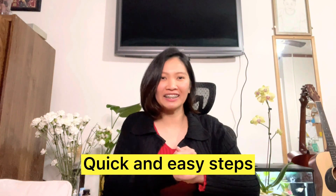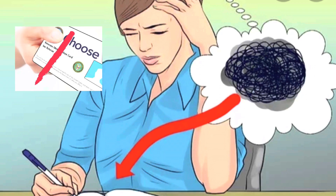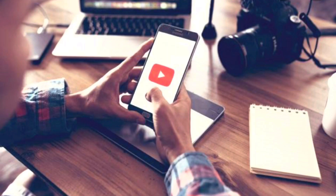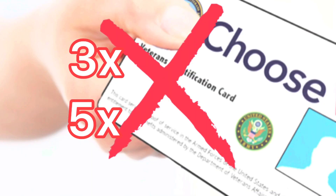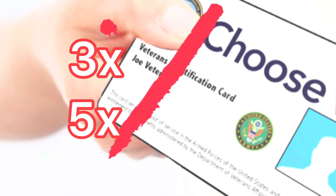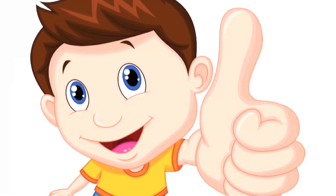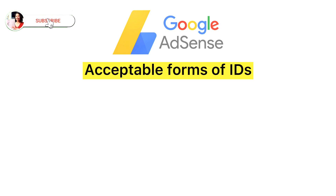Again guys, if you are facing this problem on your identity verification — especially new content creators like me who have done three to five times submitting your proof of identity — this video and tips will surely help you. What are the acceptable forms of IDs for Google AdSense identity verification?